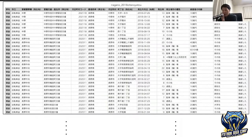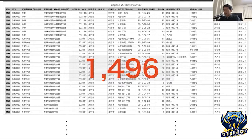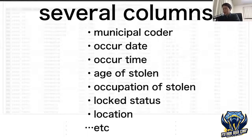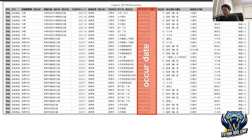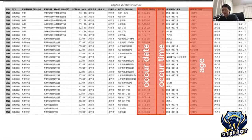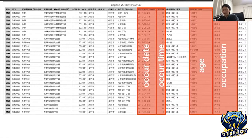This is the open data of stolen people published on the website of Nagano Prefecture. There are 1,496 cases of bike theft in 2018. The open data has several columns — for example, the offense part code and location, date, occur time, age, occupation of stolen people, and lock status. This time, I use these columns to calculate the safety score: occur date, occur time, stolen people's age, occupation, and lock status of the bike. I also use the occur location.